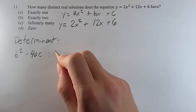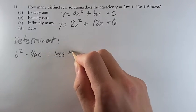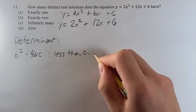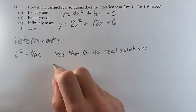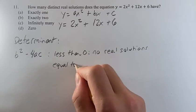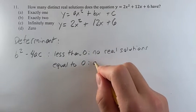And if this is less than 0, there are no real solutions. If it's equal to 0, there's one solution.